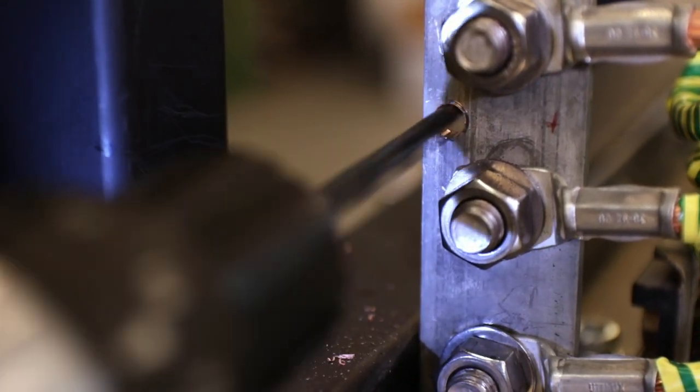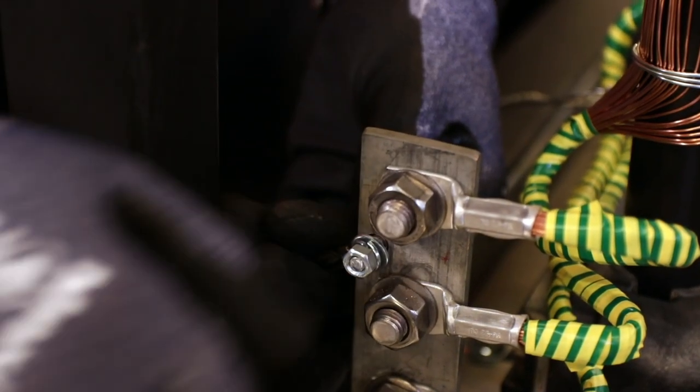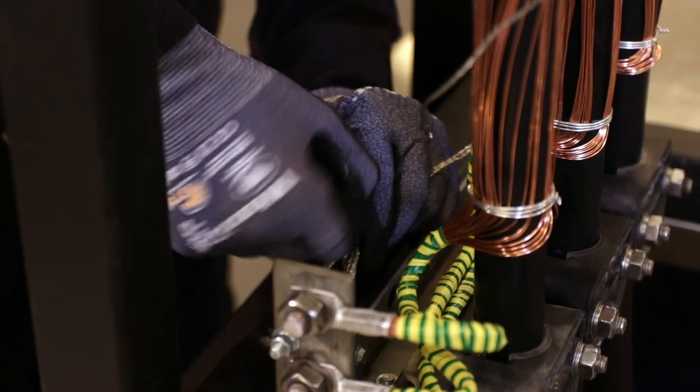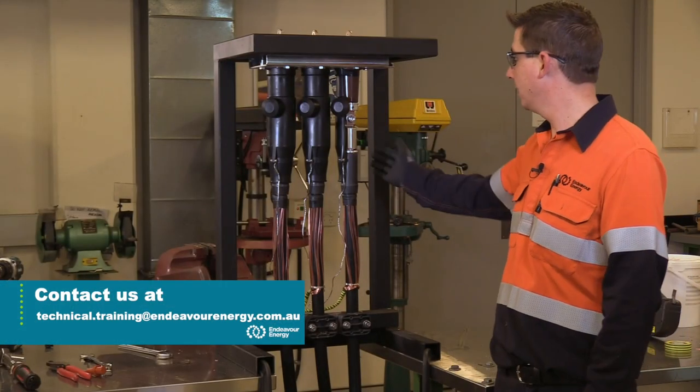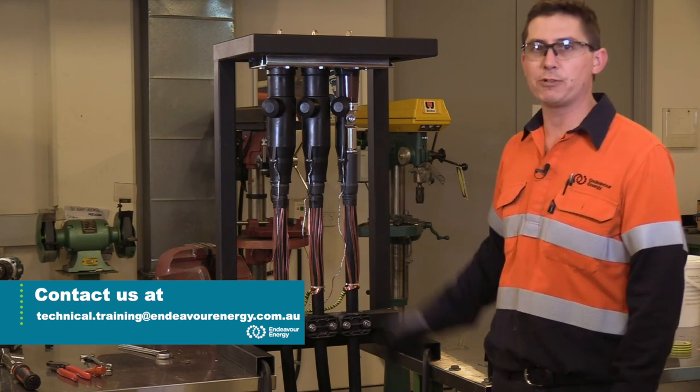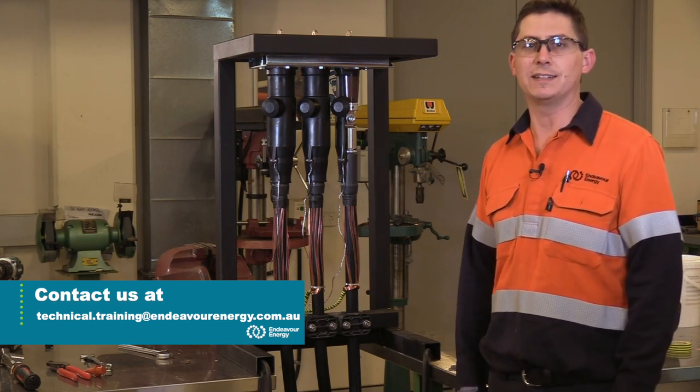Lastly, we need to connect the drain wires down to the earth bar. For older models, we have to drill a 7mm hole in the bar to build our fitment of the lug. All right, so there you have it. Our termination's complete. For any further inquiries, please contact Technical Training at Endeavour Energy.